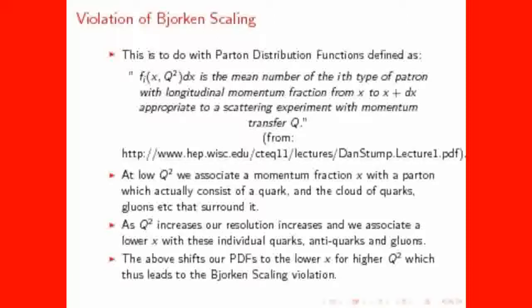For low Q our resolution is small, and what we interpret as quarks are actually made up of lots of quarks, gluons and anti-quarks, which thus combined have a high Bjorken parameter x. As Q increases we interpret these as different entities, and hence the Bjorken parameter x is taken as that of each individual one, which is smaller. This leads to the Bjorken scaling violation discussed above.